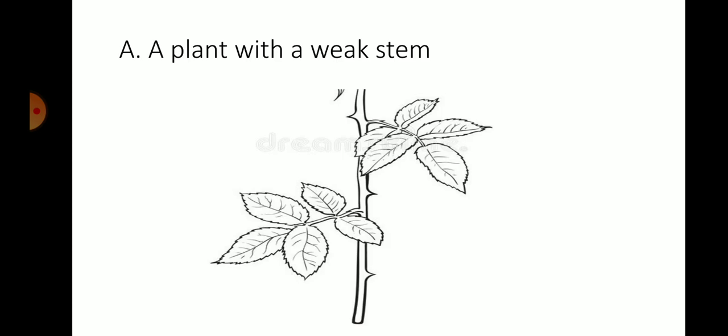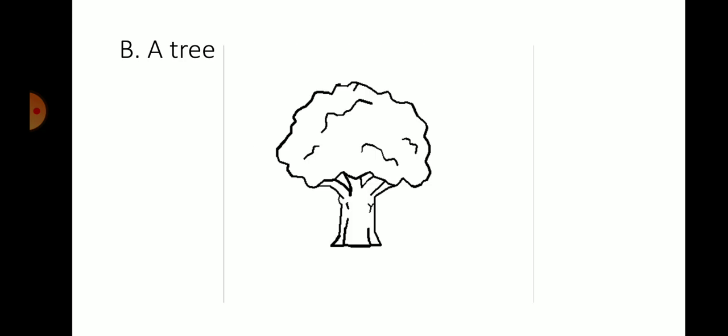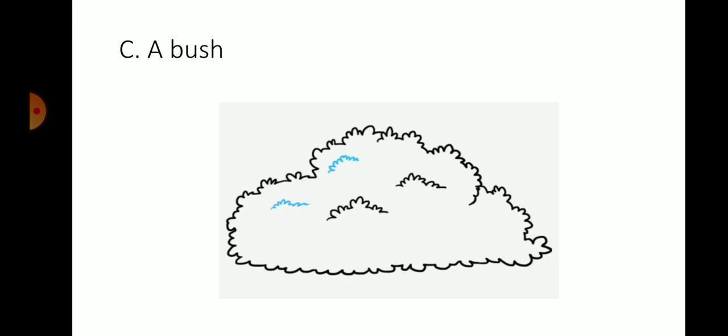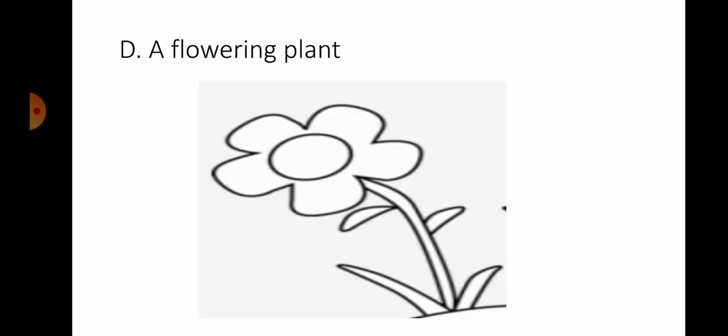First box me ap draw karenge a plant with the weak stem. Aap yaha se guide line leesatni hai. Phrer hai, ap draw karenge a second box me a tree. Third box me ap draw karenge a bush. A fourth box me ap draw karenge a flowering plant. Aapki saari pictures draw karke in my colors be add karse.